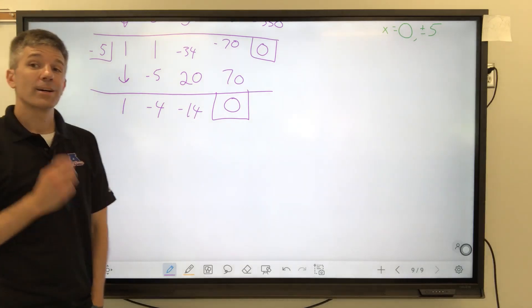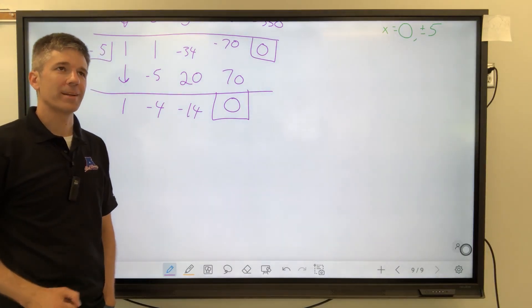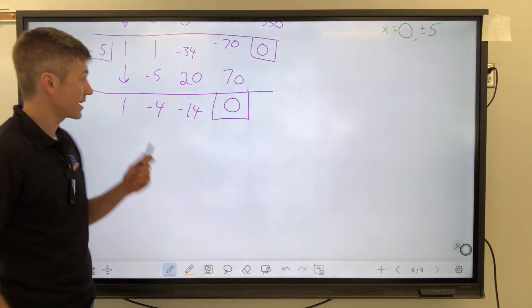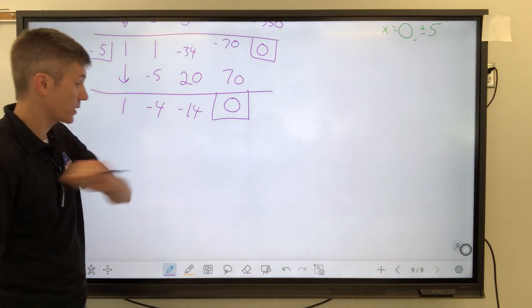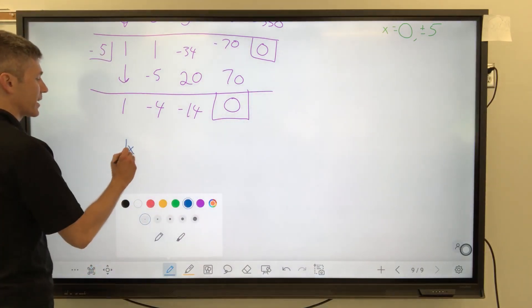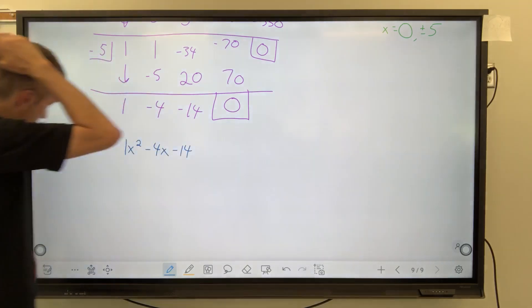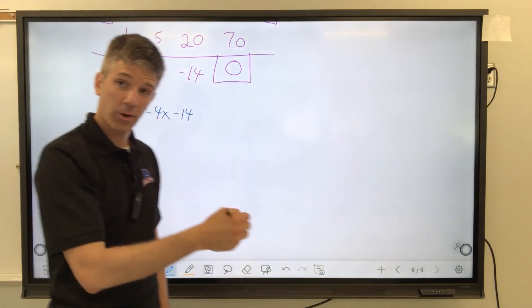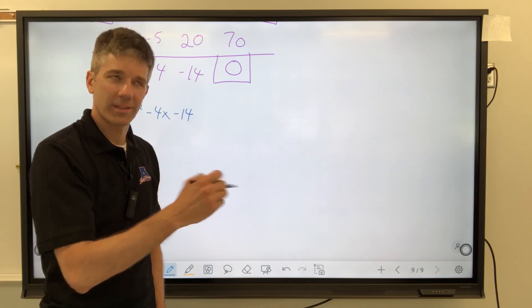All right. We now have a quadratic. Quad means 4, but it has an exponent of 2, and I held up three fingers. Okay. It's quadratic. The highest exponent you'll have is a 2. It is a trinomial, and it is going to have these three terms. All right. 1x squared. I don't know why I wrote the 1. Minus 4x minus 14, and we are going to use the quadratic formula on that.